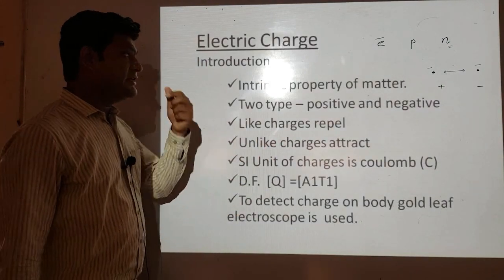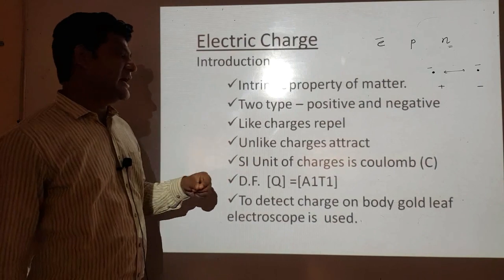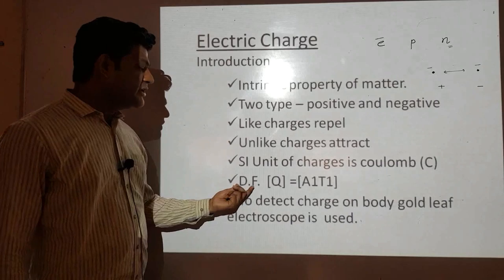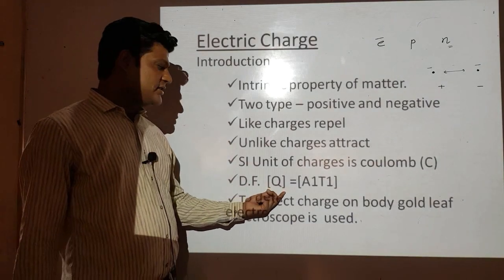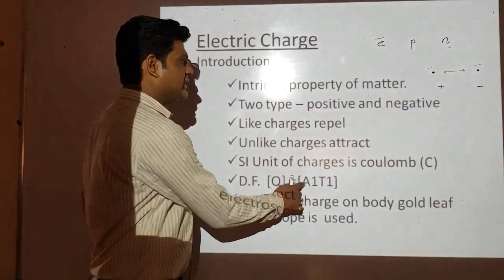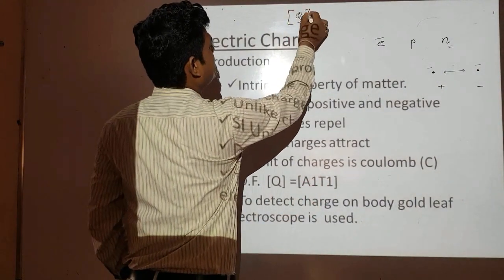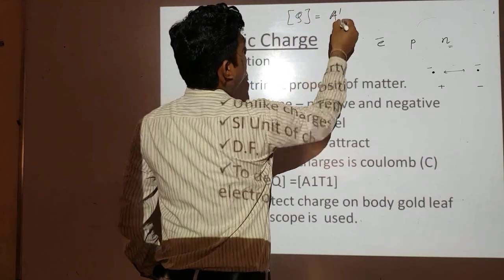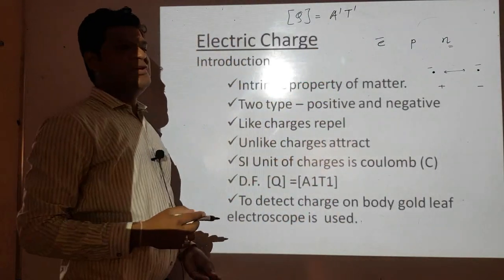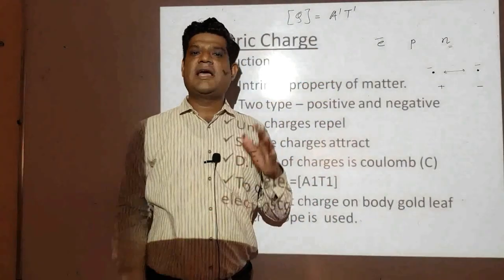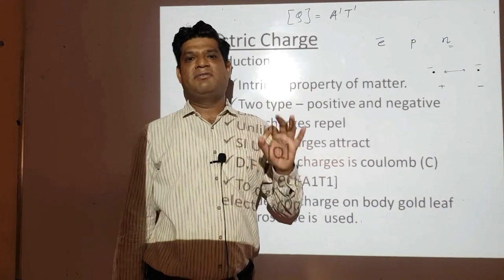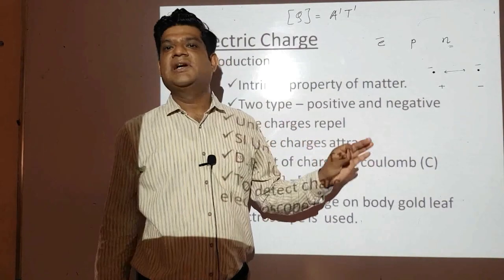What is the SI unit of charge? The SI unit of charge is Coulomb. The dimensional formula for charge is A raised to 1 and T raised to 1 — A for ampere and T for time. There is a print mistake in the material. We studied dimensional formulas in standard 11 and know how to calculate them for any physical quantity.